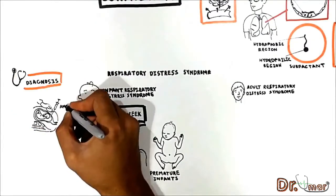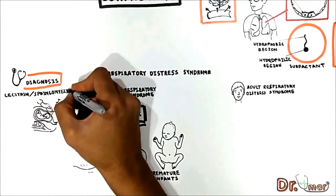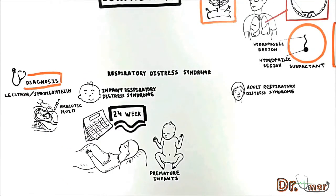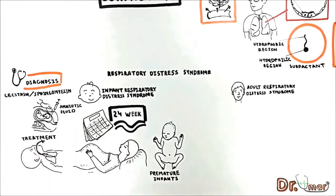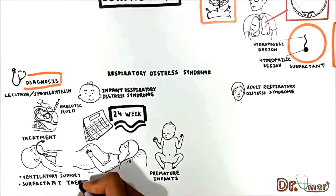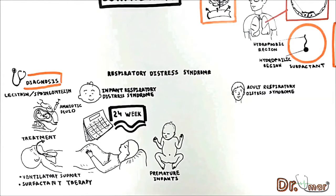In diagnosing, fetal amniotic fluid can be measured for lecithin and sphingomyelin content, the ratio of which can serve as an indicator of fetal lung maturity. A ratio of less than 1.5 is a strong predictor of neonatal respiratory distress syndrome. Treatment consists of ventilatory support and surfactant therapy through the breathing tube. Respiratory distress syndrome of a newborn can sometimes be prevented if labor can be delayed and corticosteroids are used to mature the lung. Infant respiratory distress syndrome is also called hyaline membrane disease.